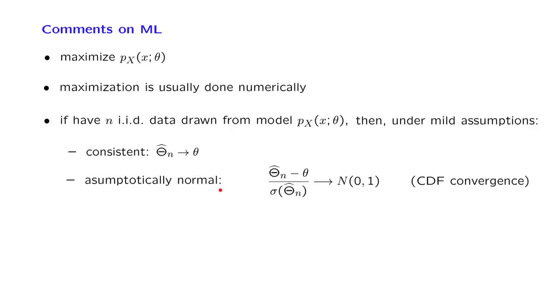In addition, we know quite a bit more. Asymptotically, the maximum likelihood estimator behaves like a normal random variable. That is, after we normalize, subtract the target, and divide by its standard deviation, it approaches a standard normal distribution. So in this sense, it behaves the same way that the sample mean behaves.